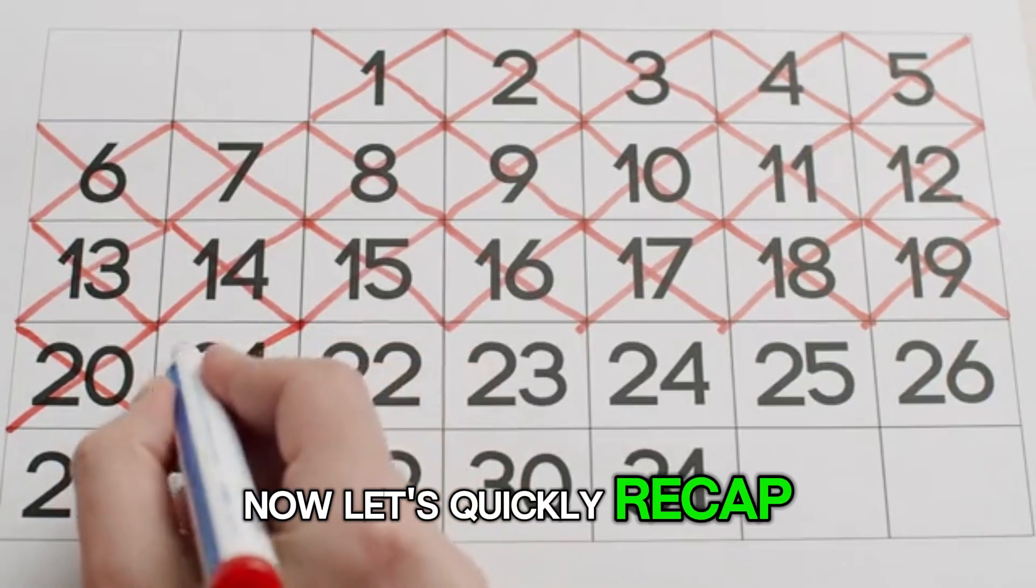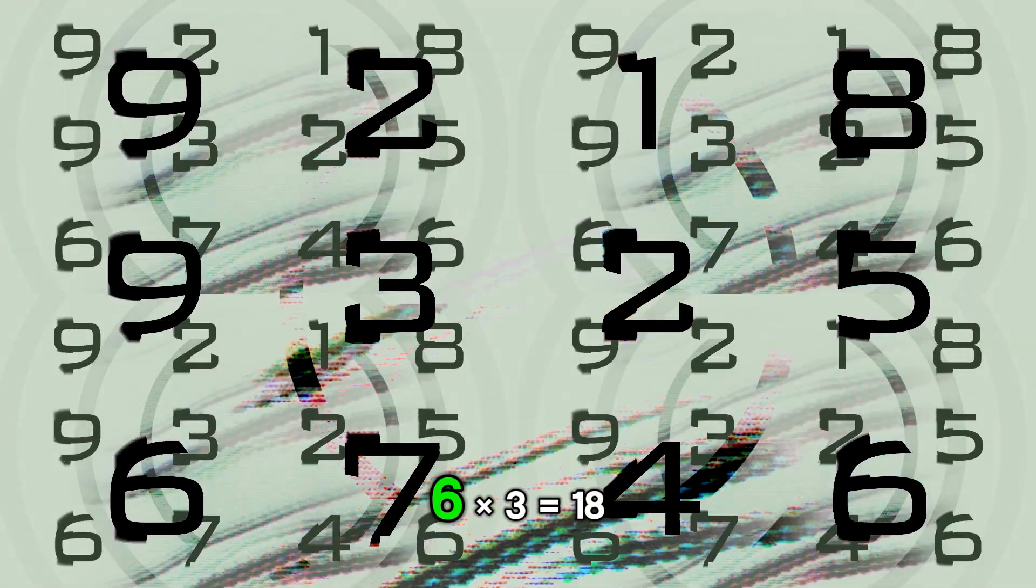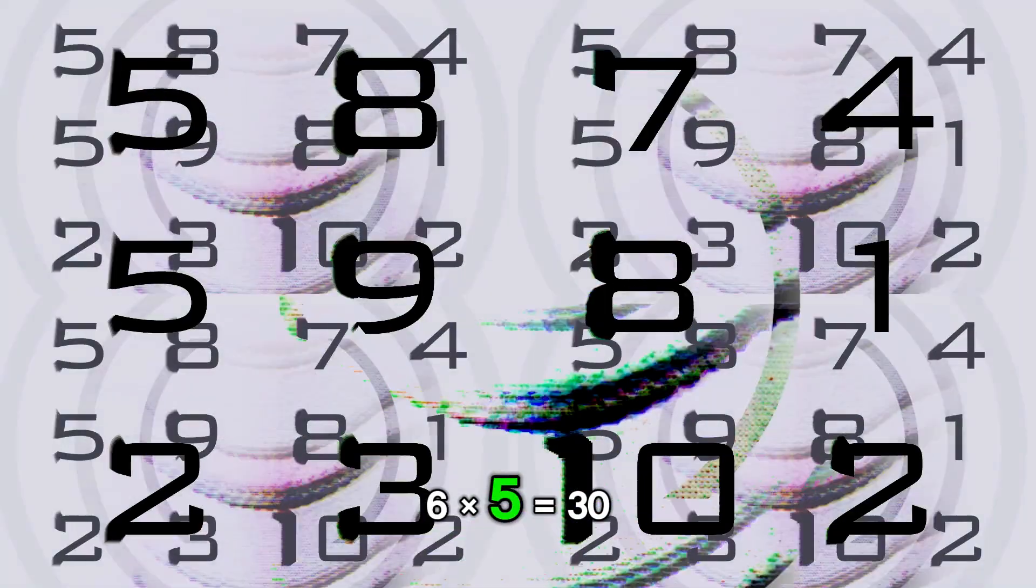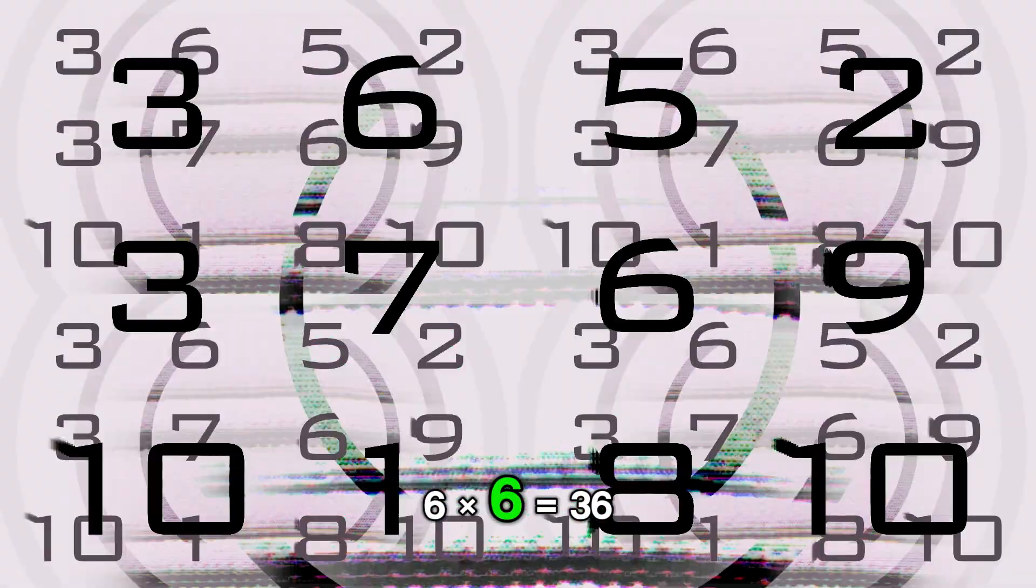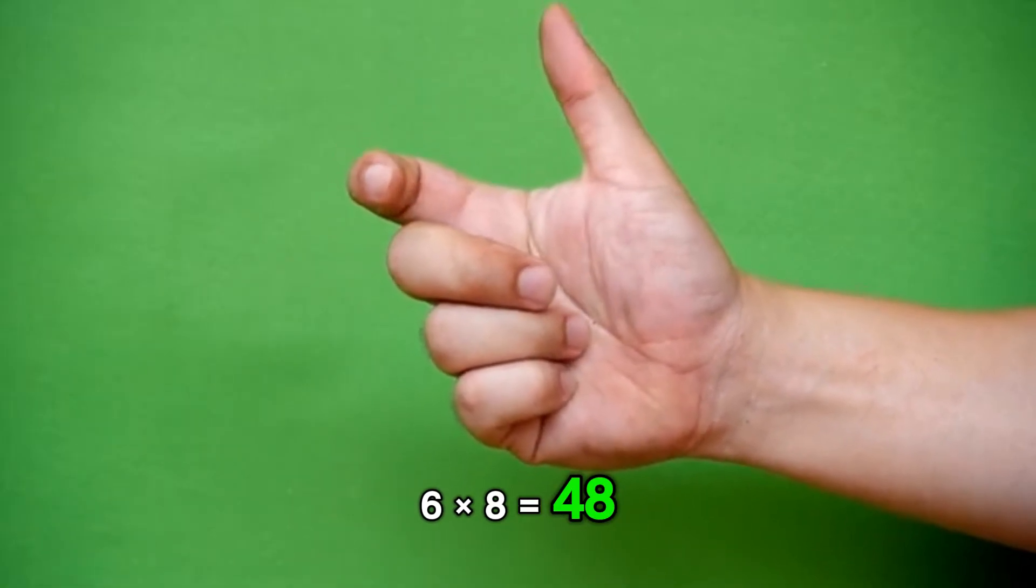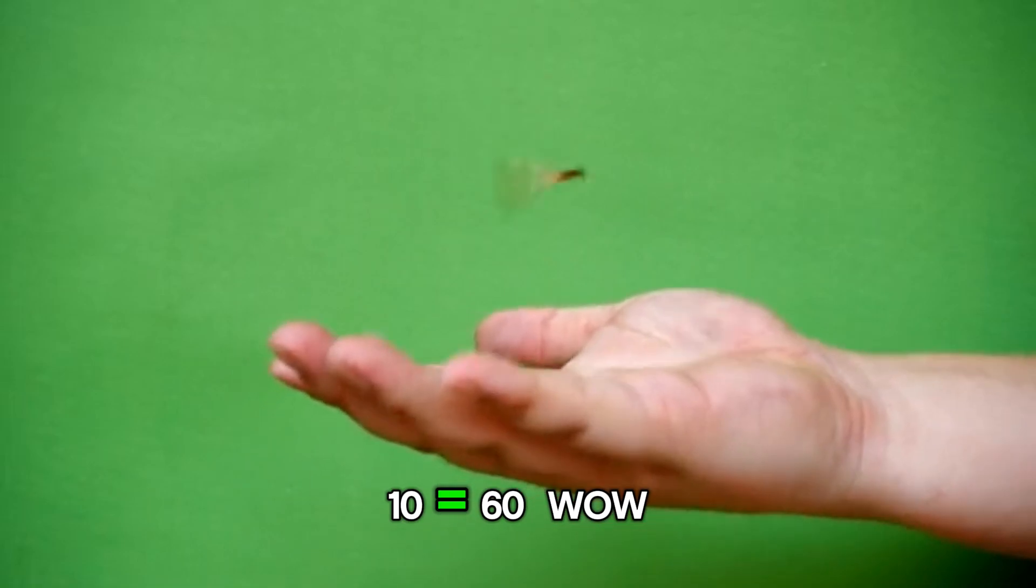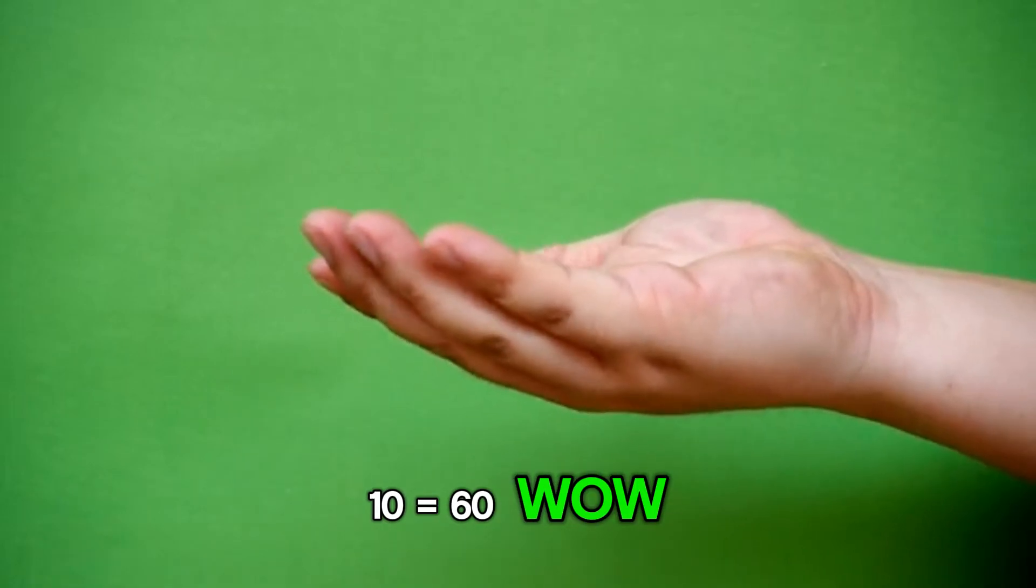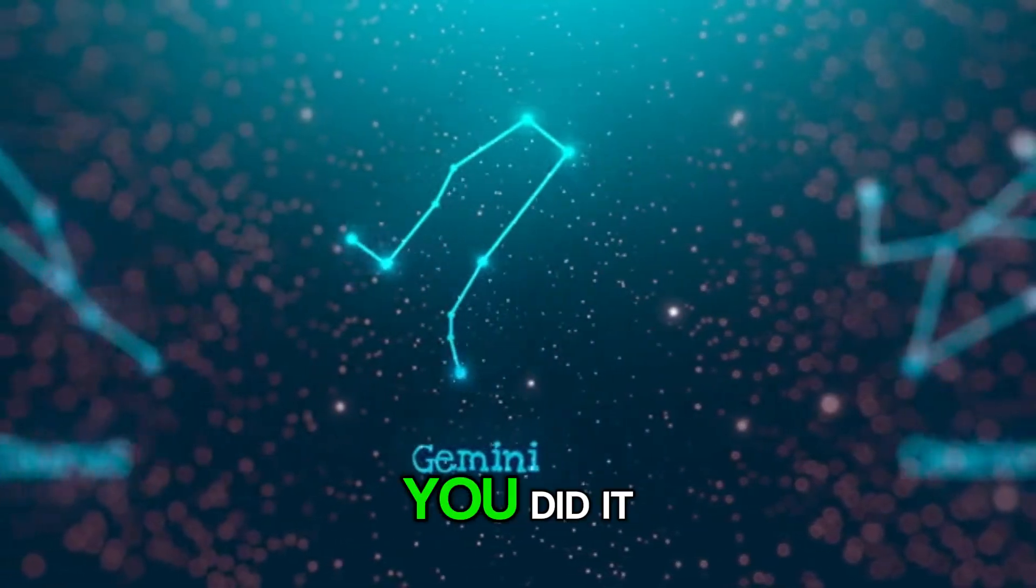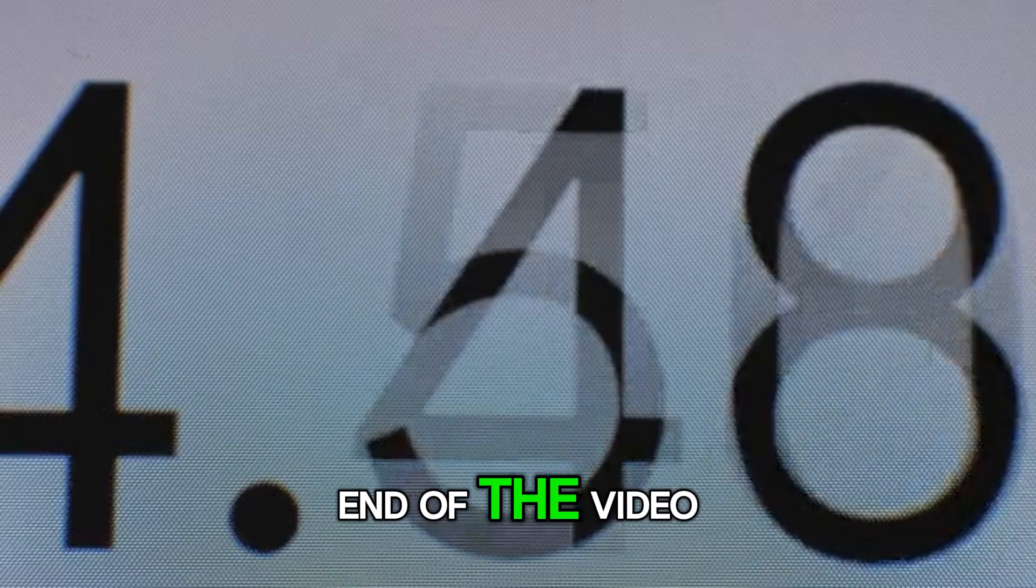Now let's quickly recap all the answers. 6 times 1 equals 6, 6 times 2 equals 12, 6 times 3 equals 18, 6 times 4 equals 24, 6 times 5 equals 30, 6 times 6 equals 36, 6 times 7 equals 42, 6 times 8 equals 48, 6 times 9 equals 54, and 6 times 10 equals 60. Wow! You learned the whole 6 times table. Give yourself a pat on the back. You did it.